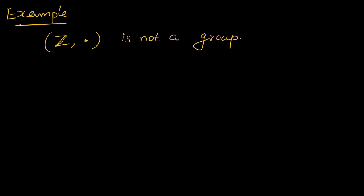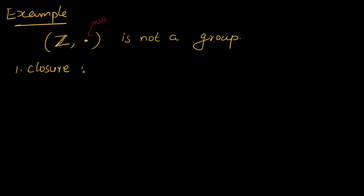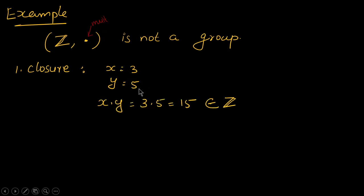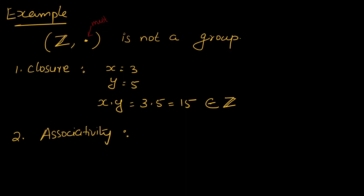Now consider Z dot, the set of integers with the multiplication operation — is it a group? The first property, closure: multiplying two integers gives another integer, so closure holds. The second property, associativity: for X equal to 2, Y equal to 3, Z equal to 5, both (X times Y) times Z and X times (Y times Z) give 30, so associativity holds. The third property, neutral element: for multiplication the neutral element is 1, since 3 times 1 equals 1 times 3 equals 3, so a neutral element exists.